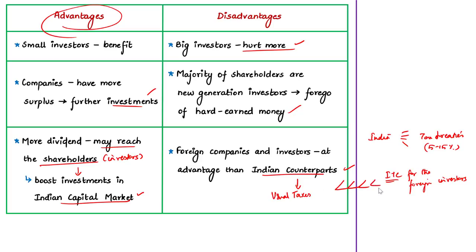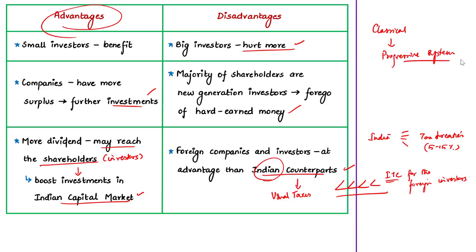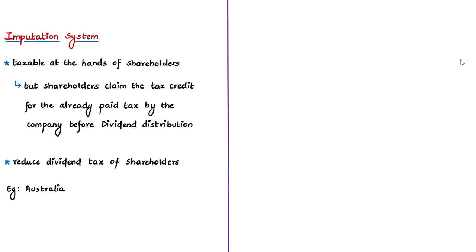Indian shareholders — that is Indian investors — are at a disadvantageous position compared to foreign investors who benefit from tax treaties. However, the author argues that though the classical system has its own merits and demerits, it is a progressive system of taxation. This is why the author welcomes reverting back to the classical system. These are the two important types of taxation to understand. Now let us look at the third system — the imputation system.